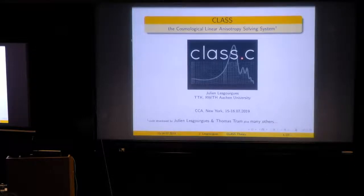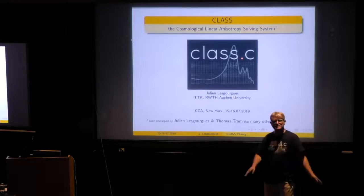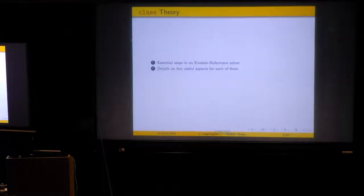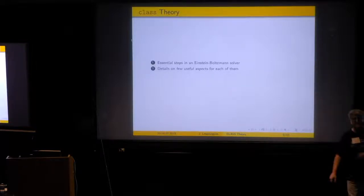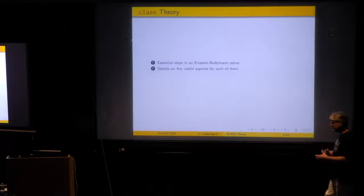So, class theory — there will be a little bit more physics now, starting from very easy things, because you have very different levels. Some of you are more large-scale structures, some are more CMB, some are just discovering cosmology, some are experts. We will start with part one, which is more basic: the essential steps in an Einstein-Boltzmann solver. For an expert this would be very basic, but even for an expert, seeing these things sometimes rings a bell and generates questions.